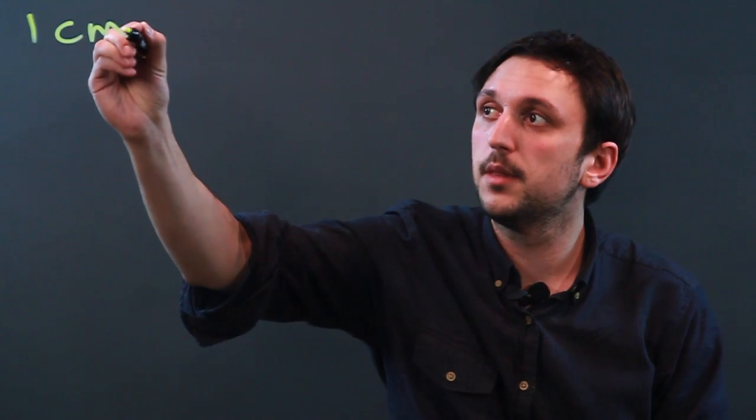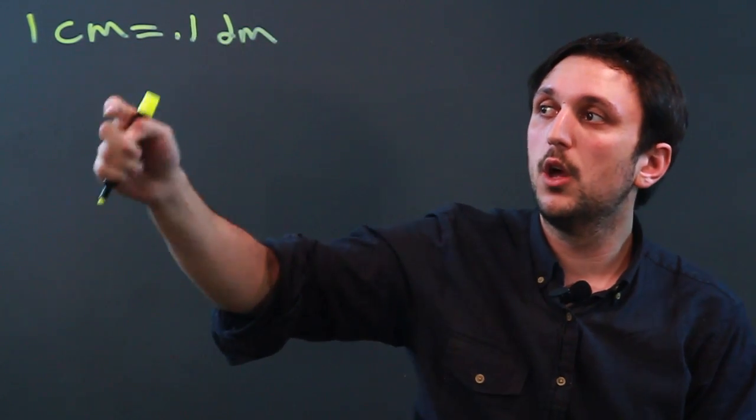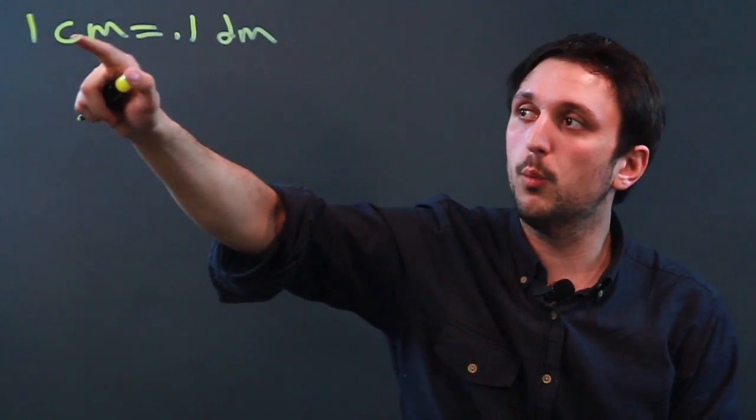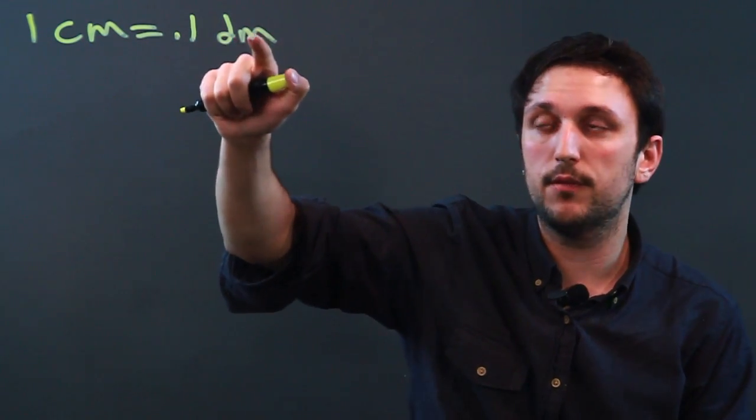So first, let's look at the bases. 1 cm, which equals 0.1 dm. So 1 centimeter, or 1 one-hundredth of a meter, equals 0.1 decimeters, or one-tenth of a meter.